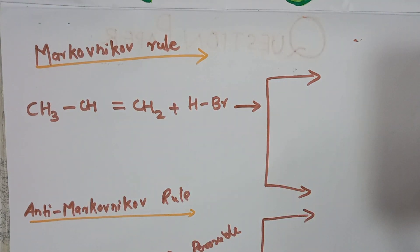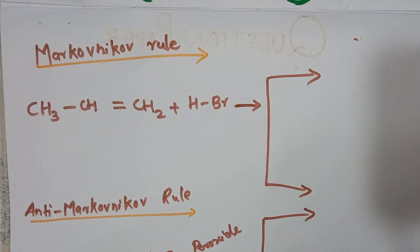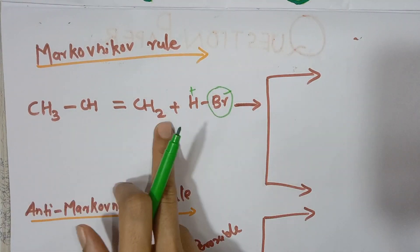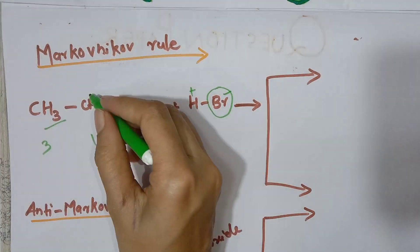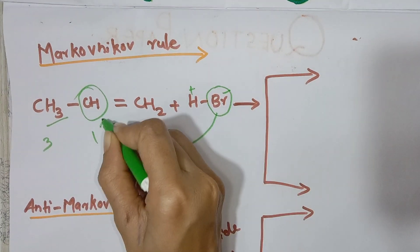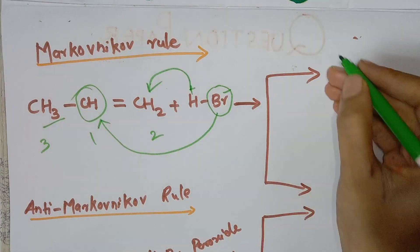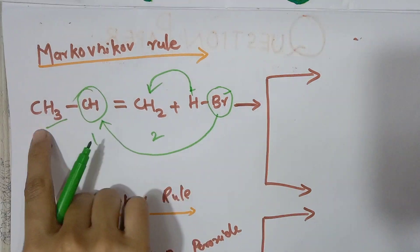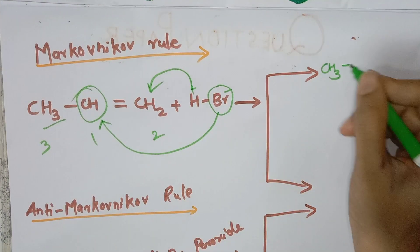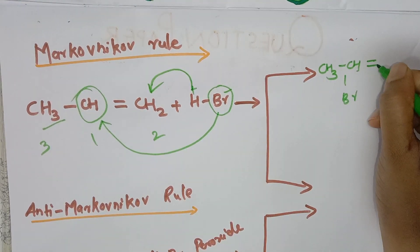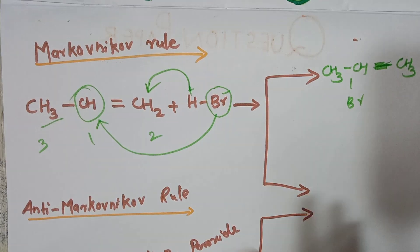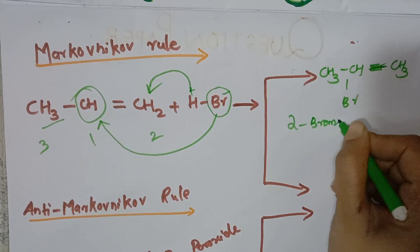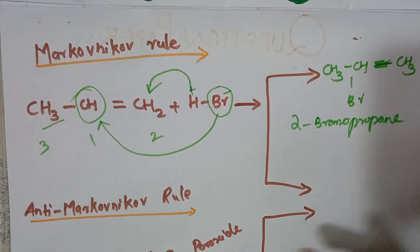Under normal Markovnikov rule, propene reacts with HBr to give 2-bromopropane as the major product. The Br attaches to the carbon bearing fewer hydrogens — which is carbon 2 — giving CH3CHBrCH3, that is 2-bromopropane.